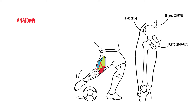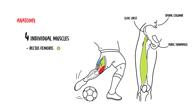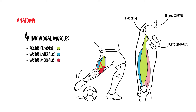The quadriceps consists of four individual muscles: the rectus femoris, vastus lateralis, vastus medialis, and vastus intermedius.